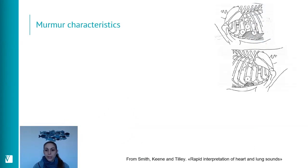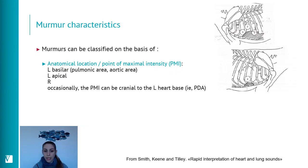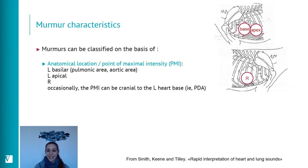When discussing anatomical location, there are at least three areas of the left chest and one area of the right chest where we can auscultate. The point of maximal intensity can be further categorized as left basilar, left apical, or right. There are also situations where the murmur is cranial to the left base — typical for patent ductus arteriosus.